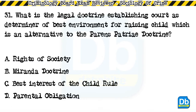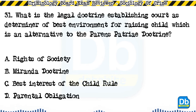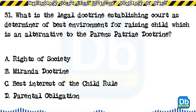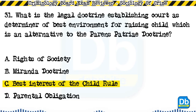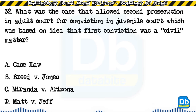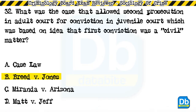The answer is A, adoption. Question 31: What is the legal doctrine establishing court as determiner of best environment for raising a child, which is an alternative to the parens patriae doctrine? a) rights of society, b) Miranda doctrine, c) best interest of the child rule, d) parental obligation. The answer is C, best interest of the child rule. Question 32: What was the case that allowed second prosecution in adult court for conviction in juvenile court, based on the idea that the first conviction was a civil matter? a) case law, b) Breed versus Jones, c) Miranda versus Arizona, d) Matt versus Jeff. The answer is B, Breed versus Jones.